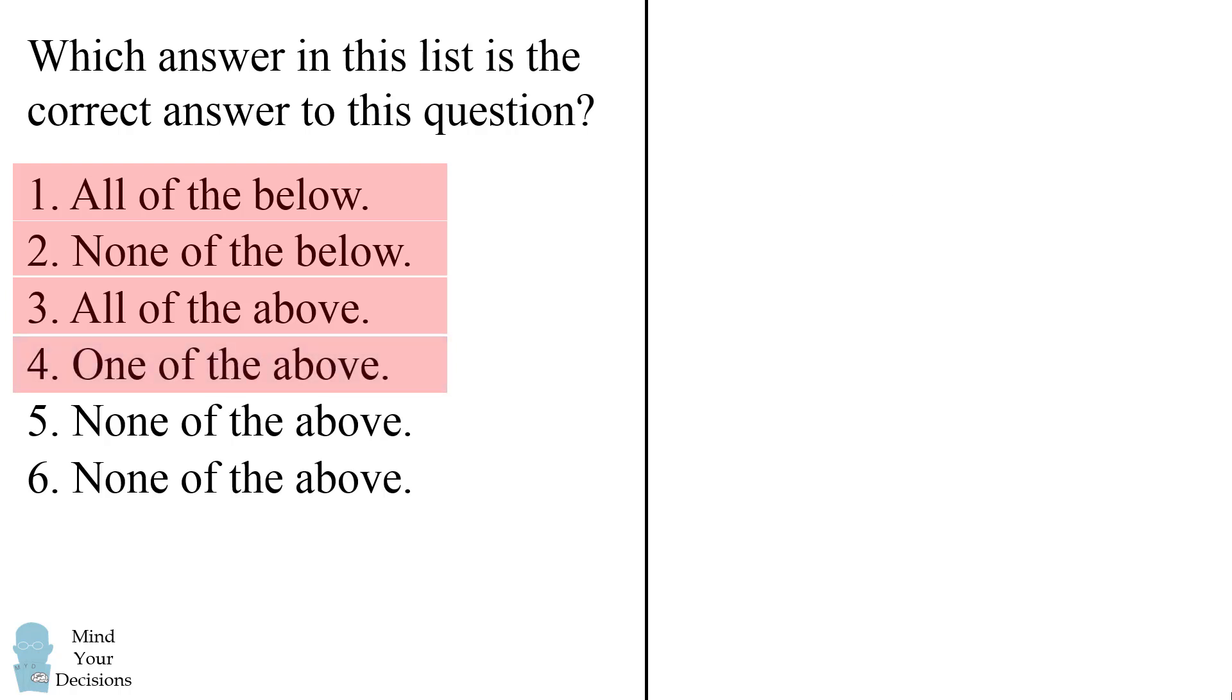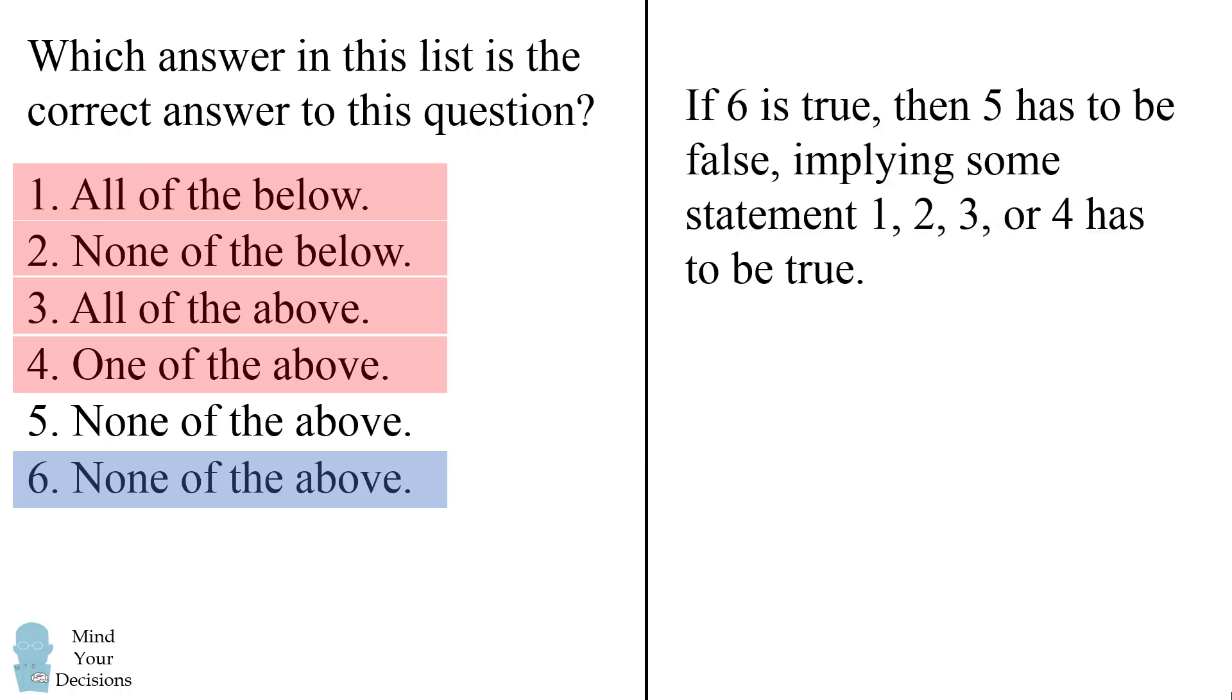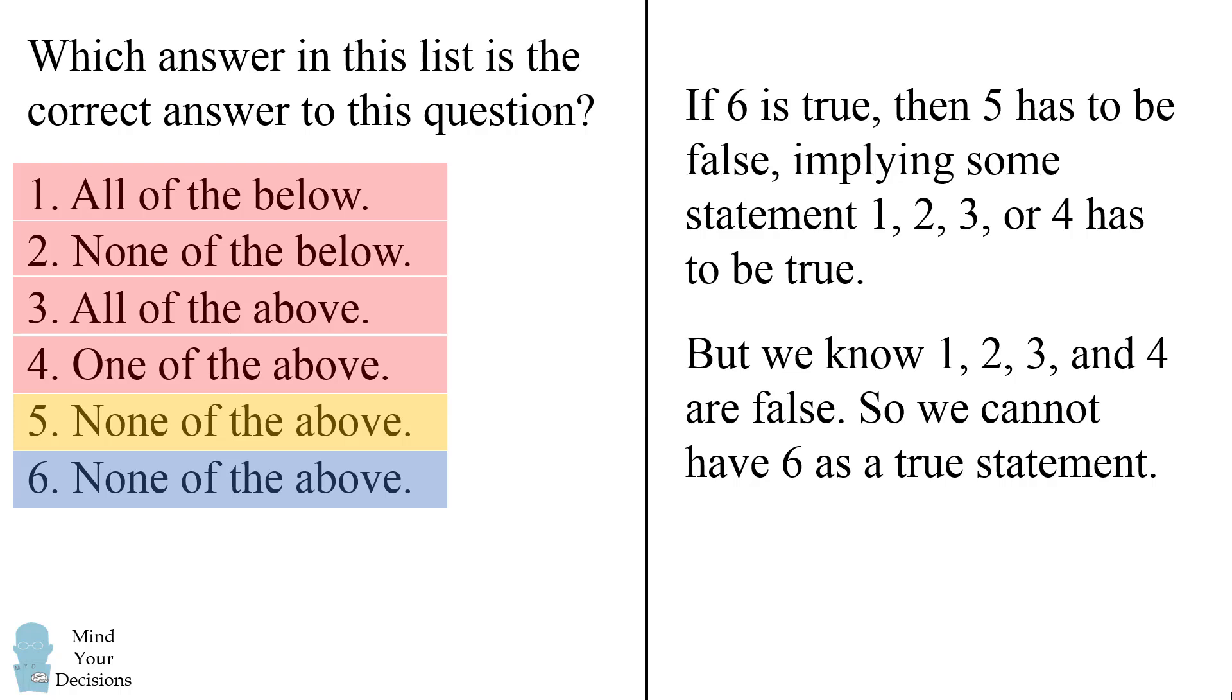Now let's skip statement 5 for a second and go to statement 6. None of the above. If 6 is true, then 5 has to be false, implying some statement 1, 2, 3, or 4 has to be true. But we already know 1, 2, 3, and 4 are false, so statement 6 cannot be a true statement.